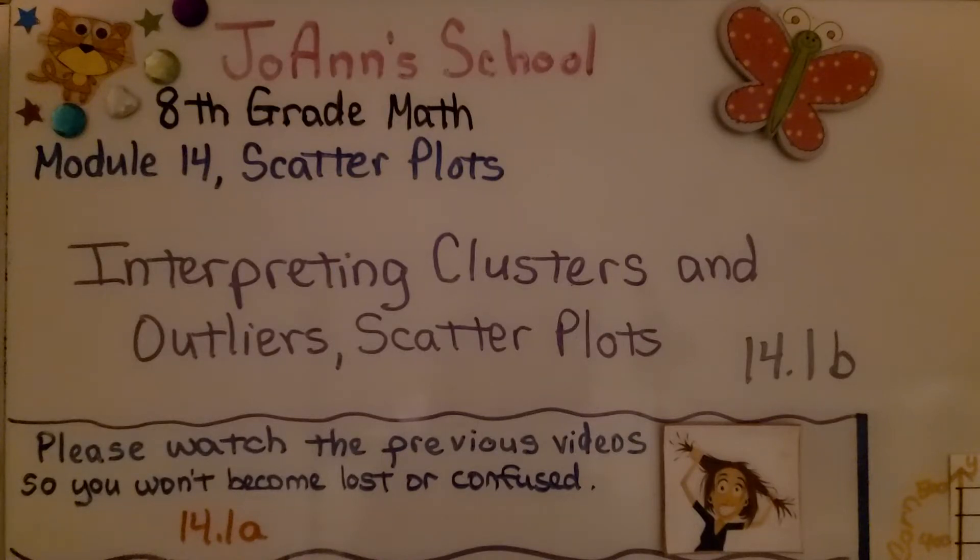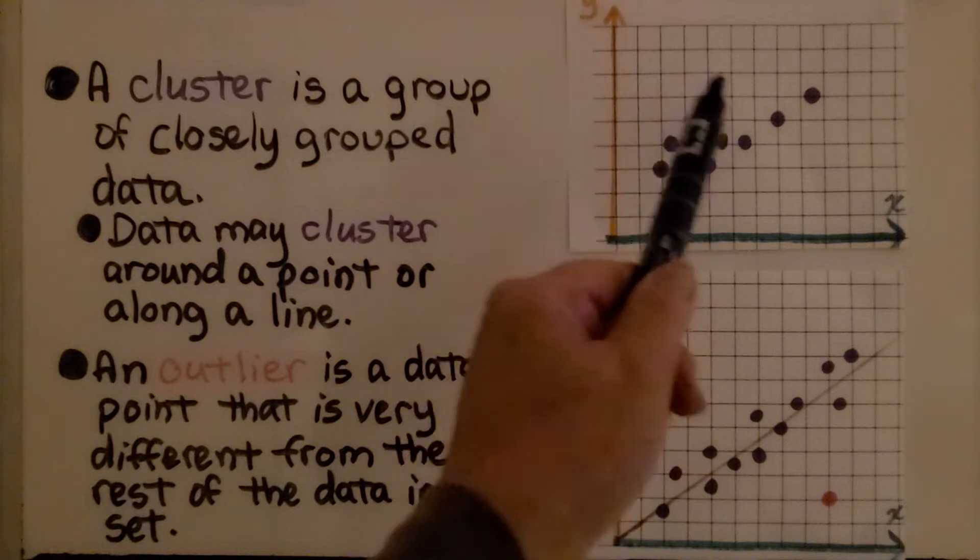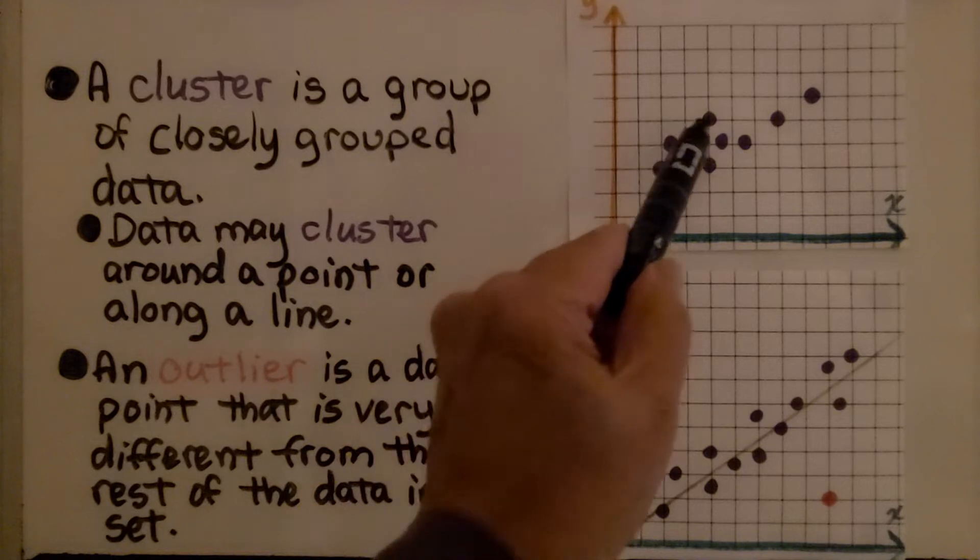Interpreting Clusters and Outliers Scatter Plots Lesson 14.1b. A cluster is a group of closely grouped data. Data may cluster around a point, like here,